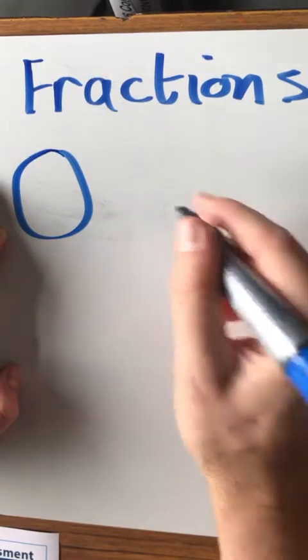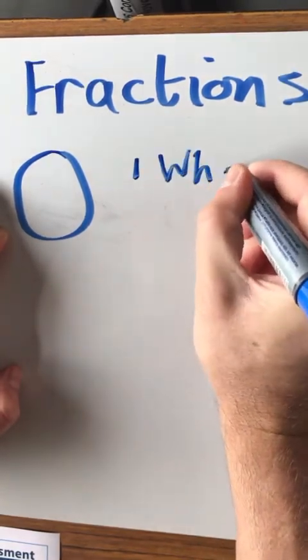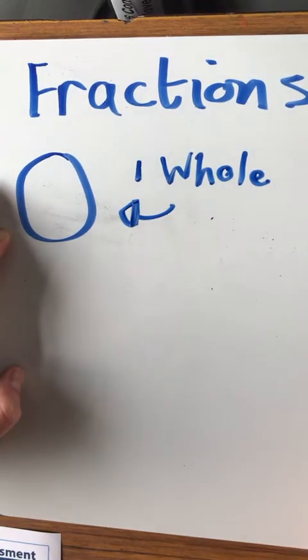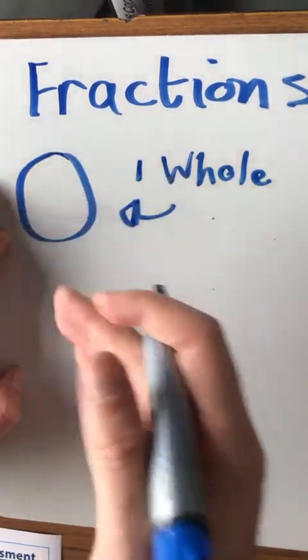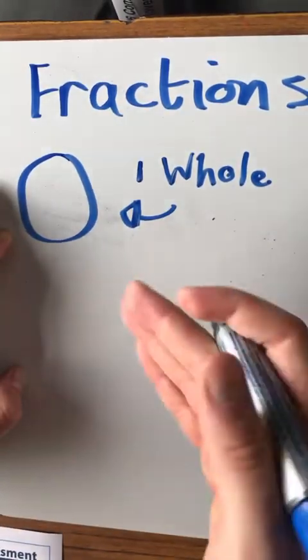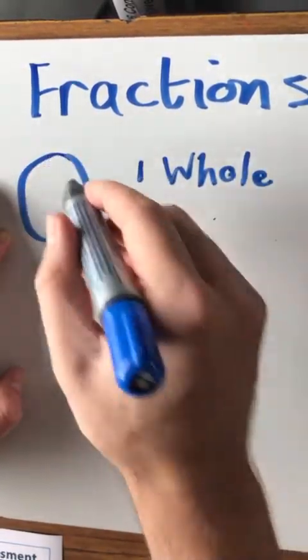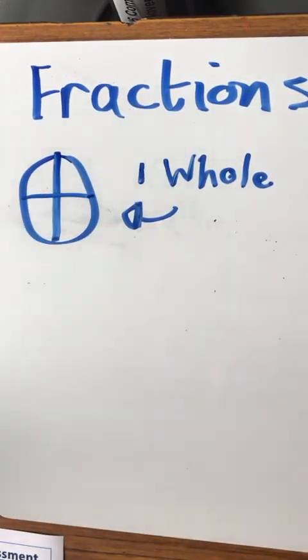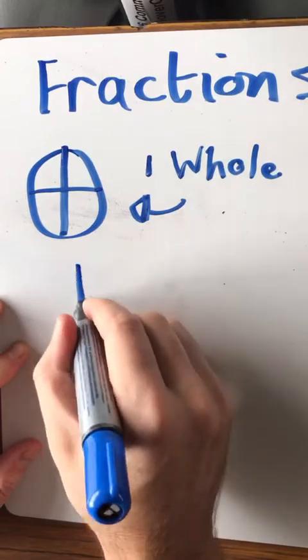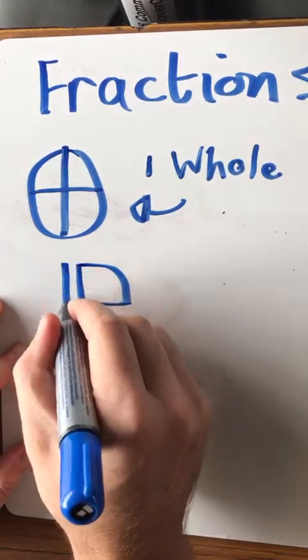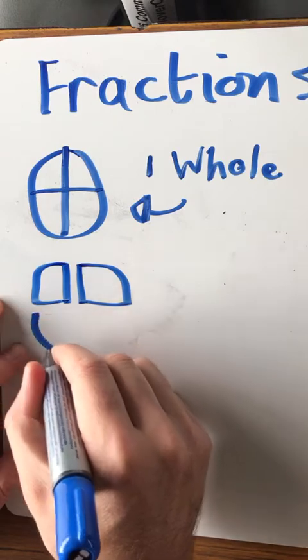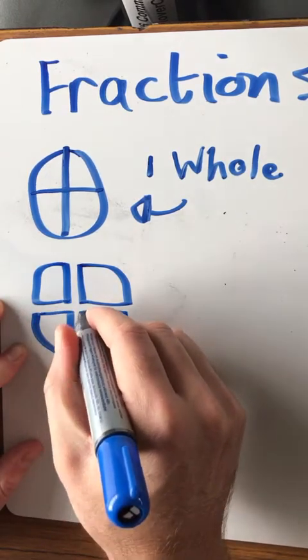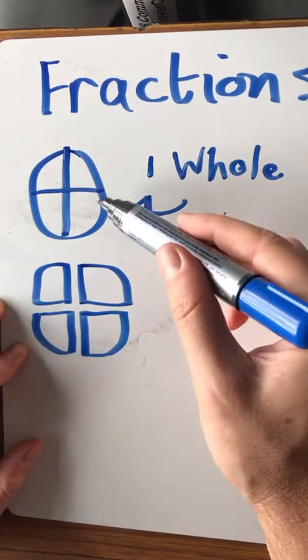So this circle represents one whole. And if we are to split this whole, so pretend it's a piece of cake, if we are to split this whole into parts, we split it into four parts.